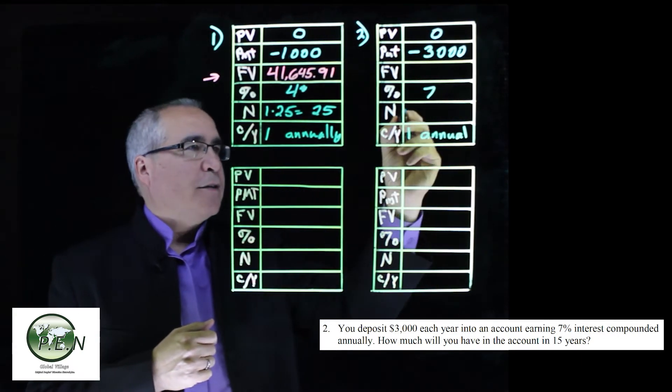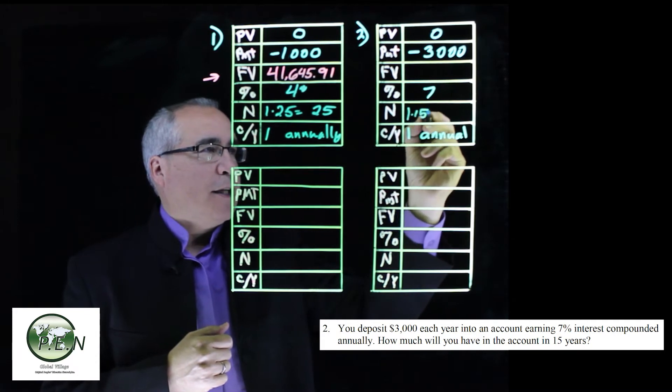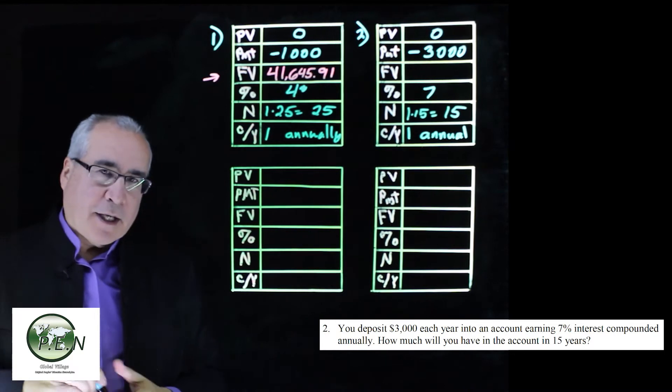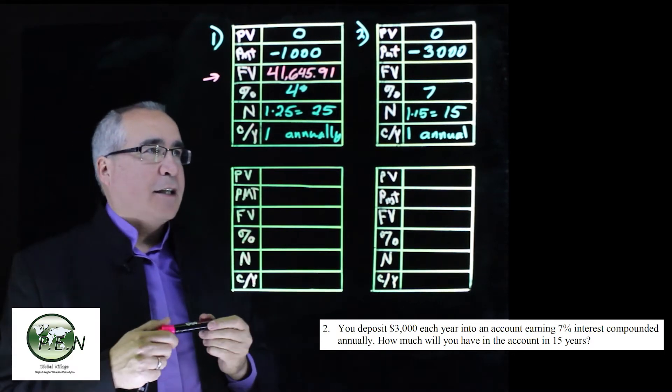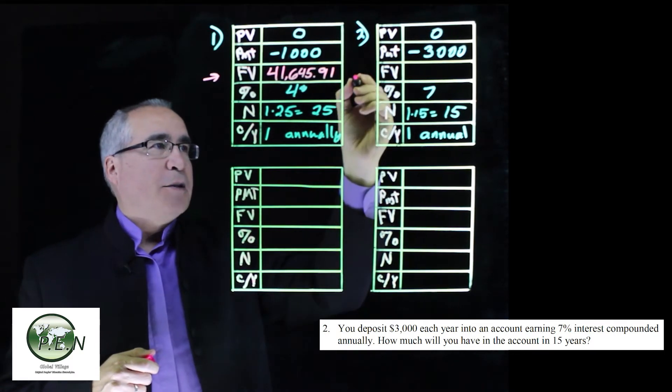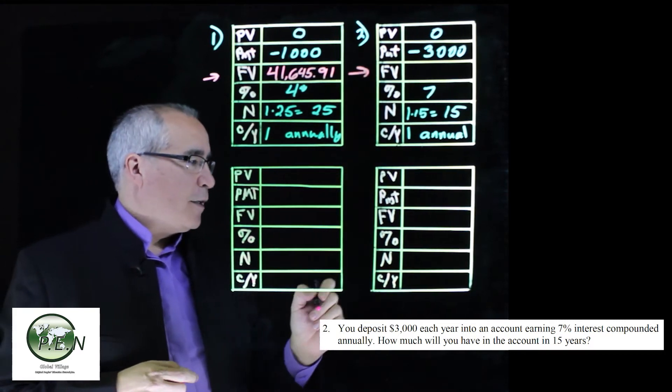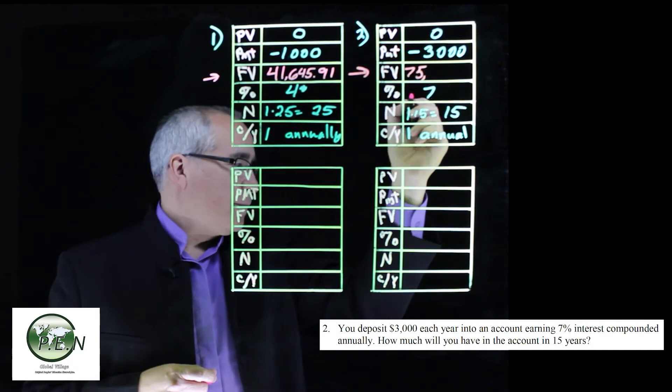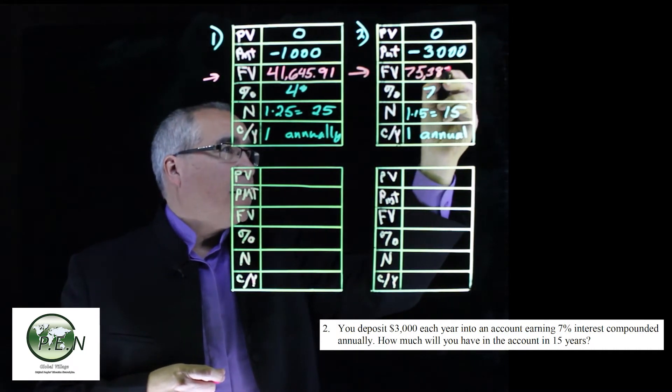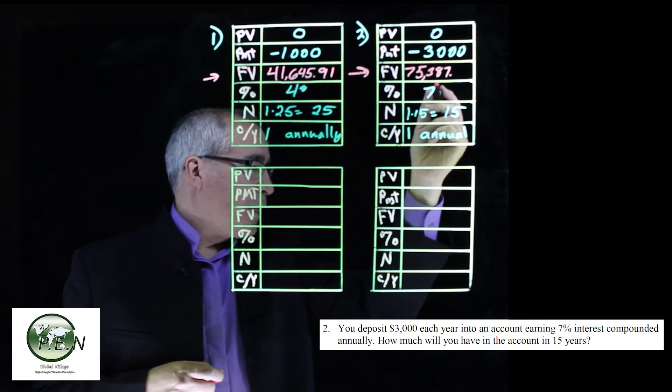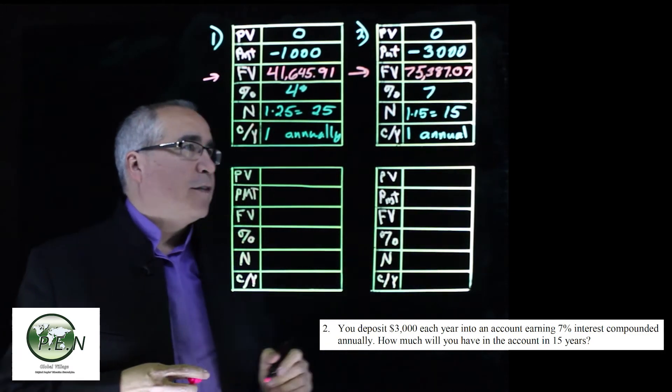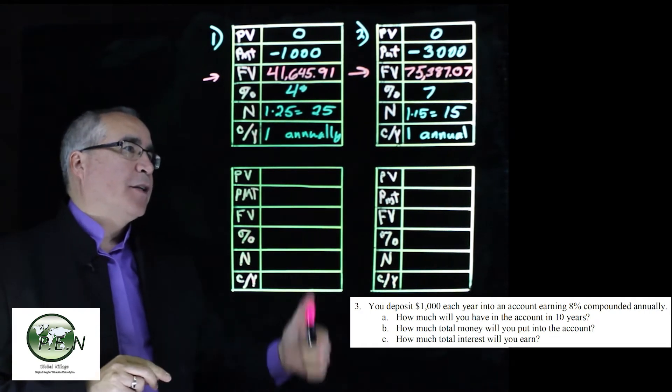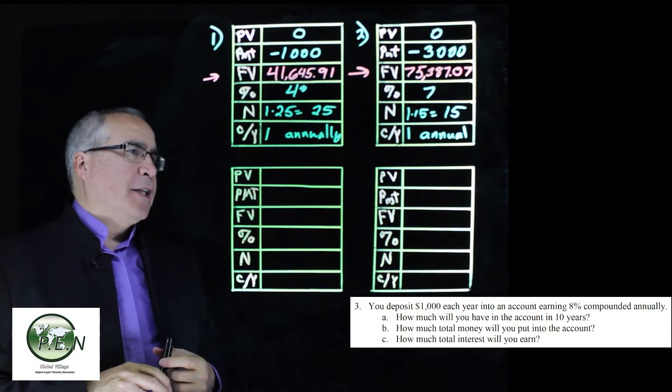We want it for 15 years. That's 1 times 15 giving us 15 here. There's just one slot that we haven't got filled in, and that's what we calculate on. So we push the button, get the future value. We're going to have $75,387.07. It's $3,000 a year, every year, for 15 years.